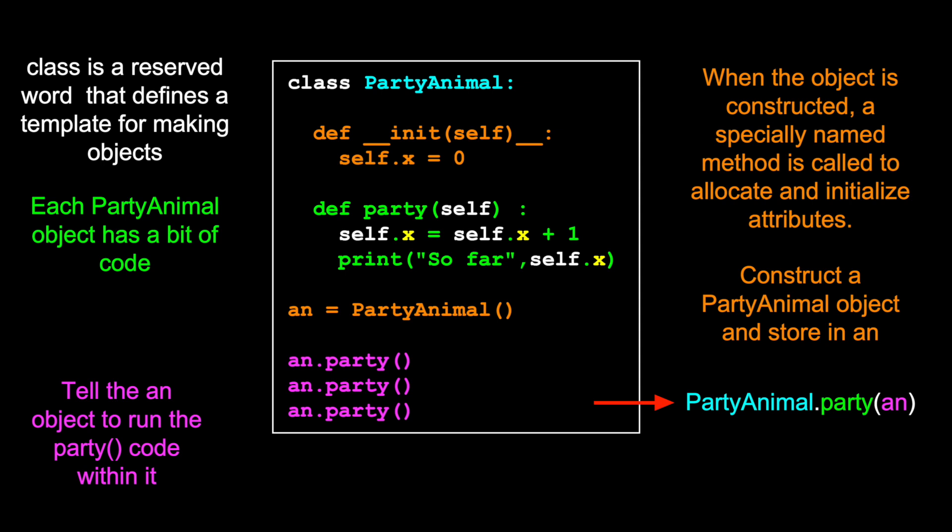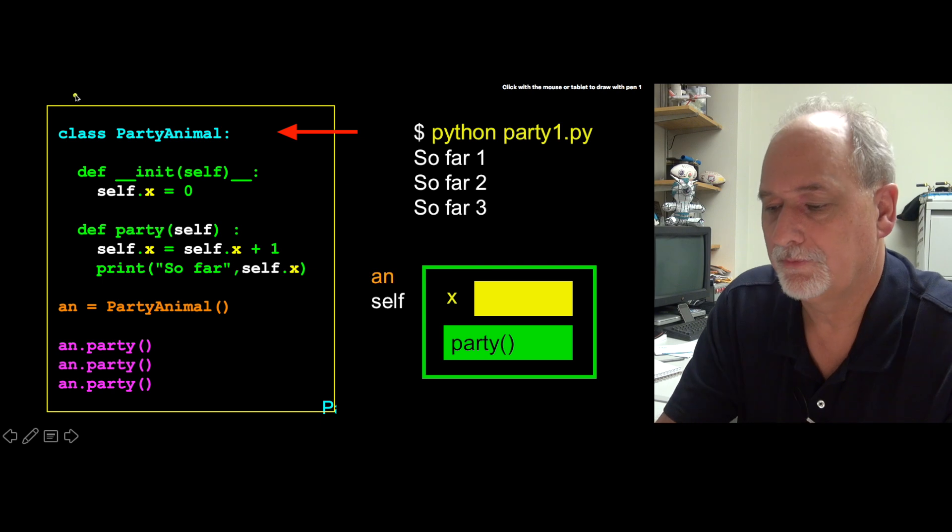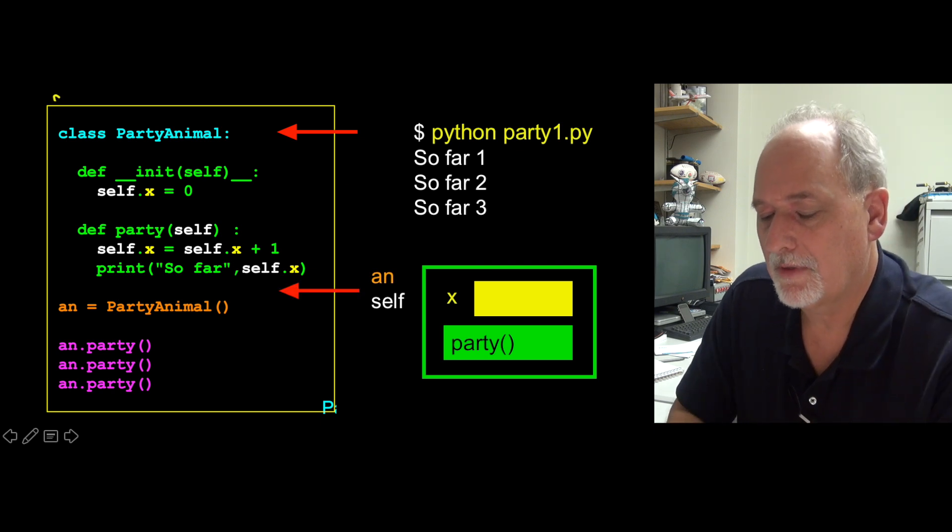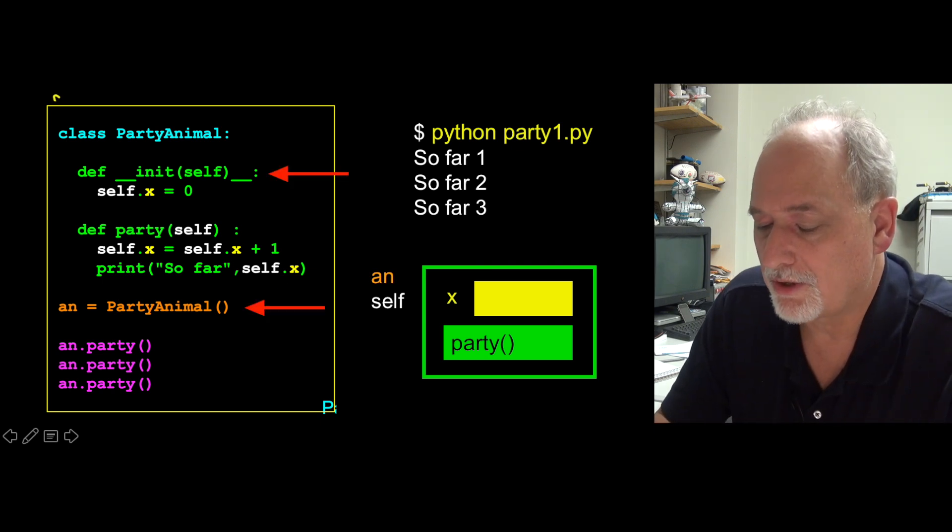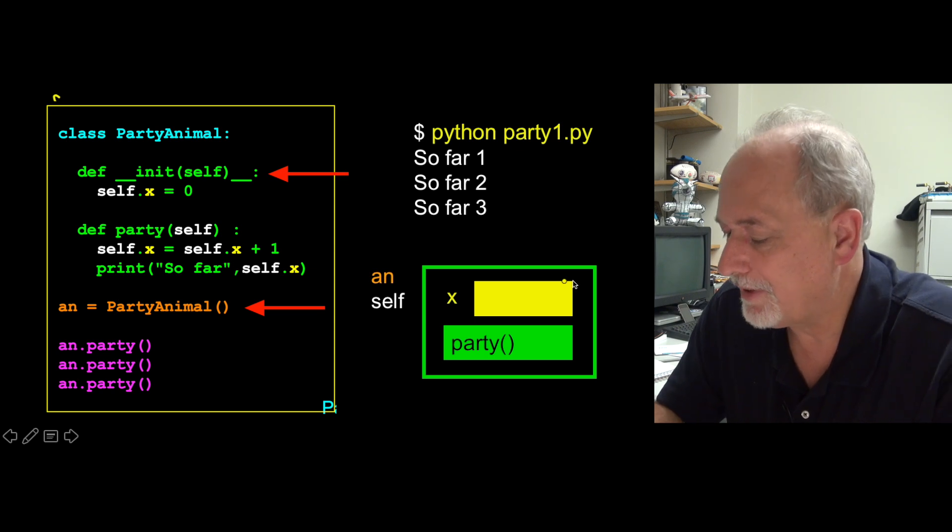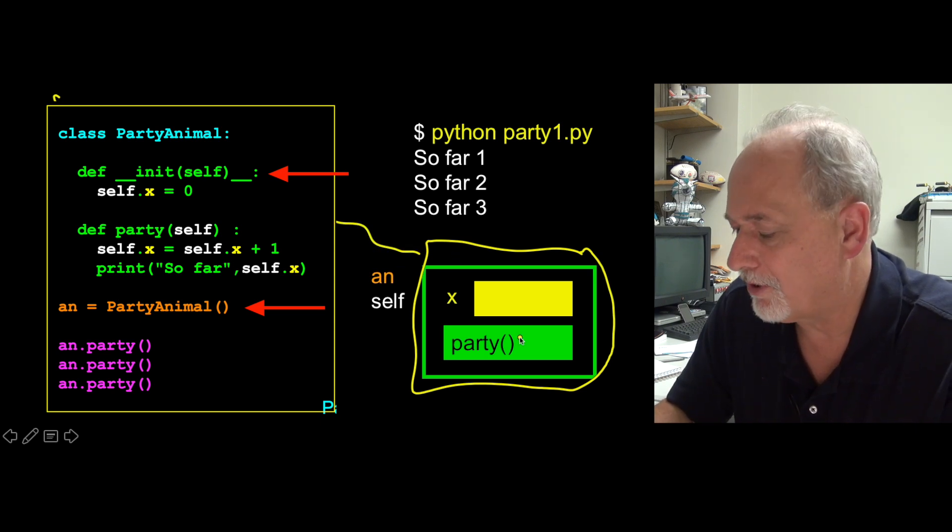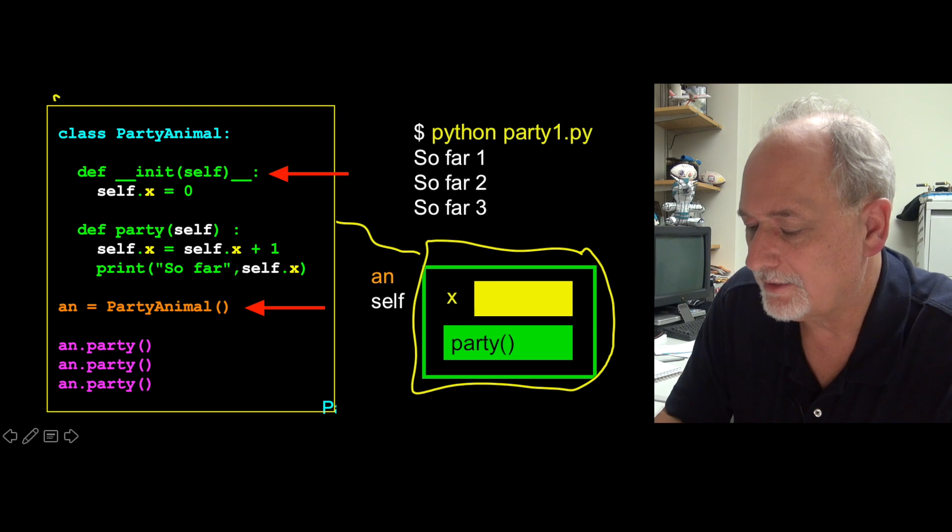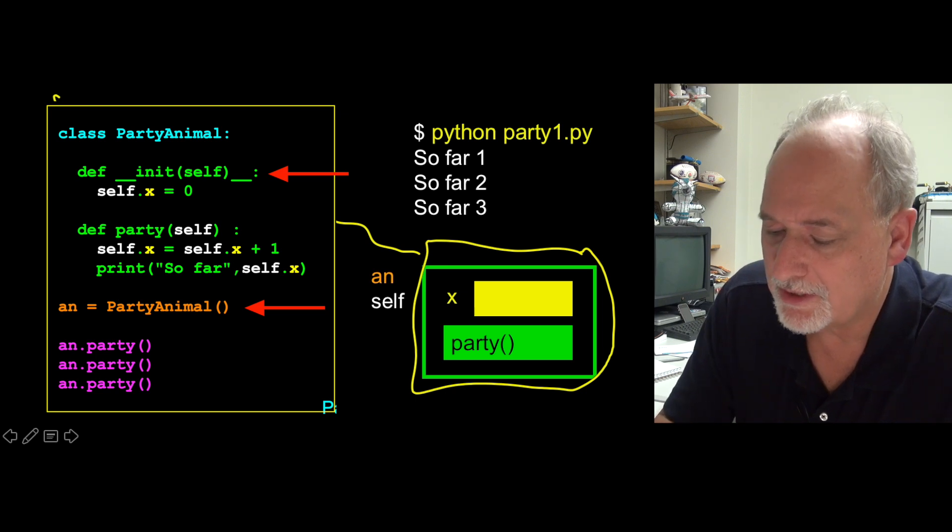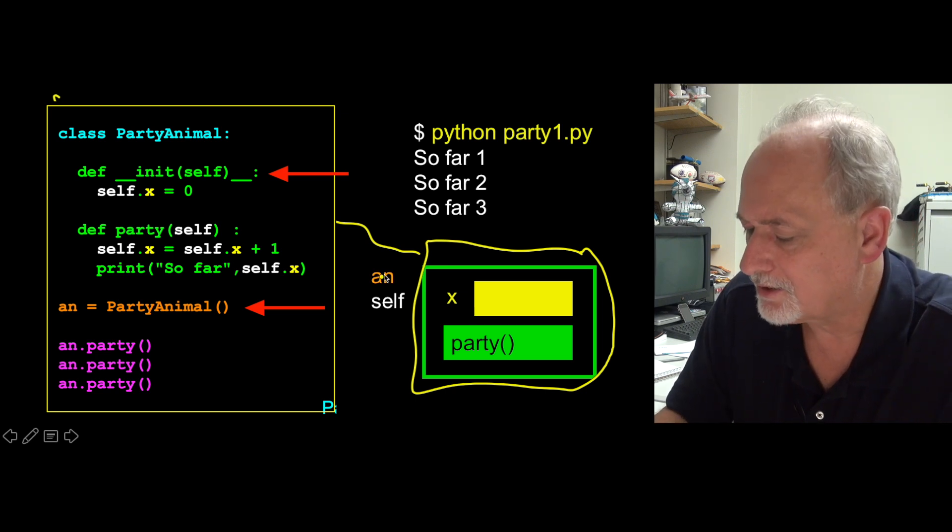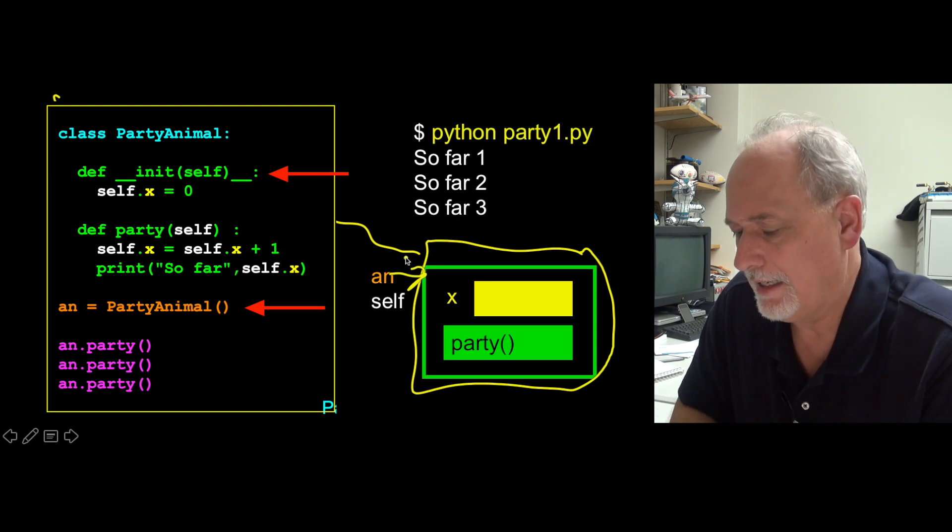So if we watch how this executes, it starts up here. It just defines it. And then we construct it. And that's what basically constructing it. We know how to construct it because we look at the class and we make a variable x, we make some code party. And then we construct that, that's what the party animal does. And then we assign that into an. And so an is now pointing at that.